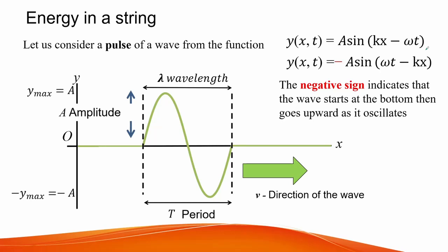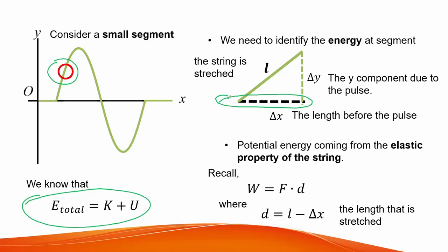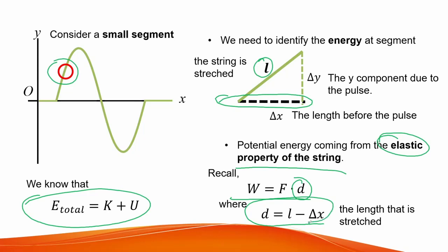Here we consider the pulse of a wave. We take a small segment and examine it closely. The wave function has a negative sign, indicating the wave starts at the bottom and pushes upward. The total energy equals kinetic energy plus potential energy. The dashed line represents the string before the pulse; as it experiences the wave, the string is stretched to length L. The potential energy here is due to the elastic property of the string, not gravitational effects. The work equation equals force times displacement, where displacement is the stretched length minus the original length.